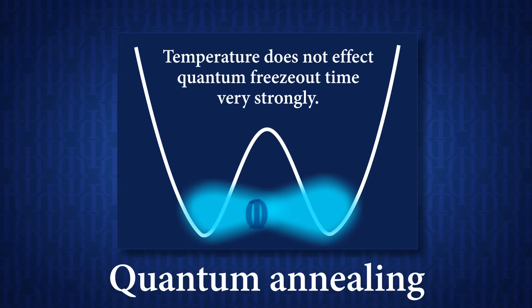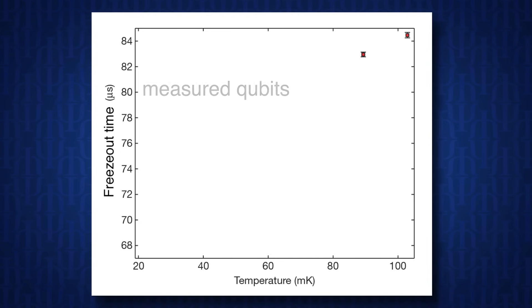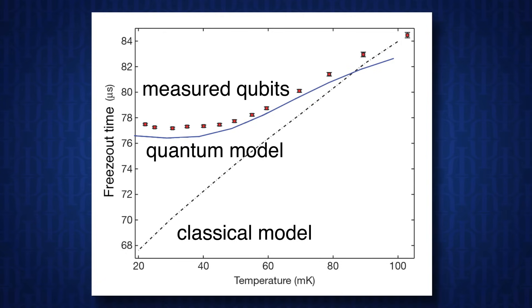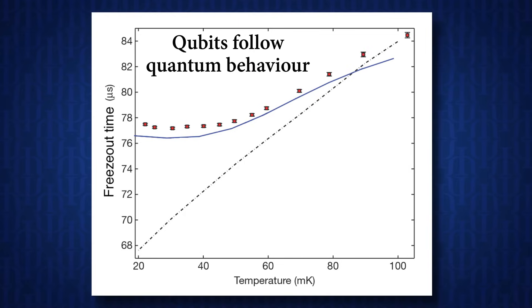So quantum tunneling on the other hand is very weakly correlated with temperature. So what that means for the freeze-out time is that you would expect it to stay the same even when you reduce the temperature. And this is exactly what was shown in a paper published in Nature. So for systems of eight qubits, the freeze-out time matched the quantum model and didn't match the classical model because it stayed the same at lower and lower temperatures. So this showed that at least groups of eight qubits were behaving quantum mechanically.